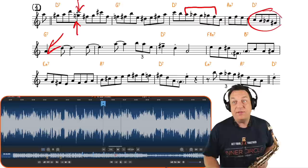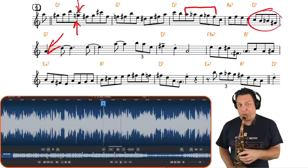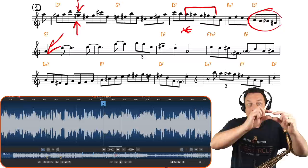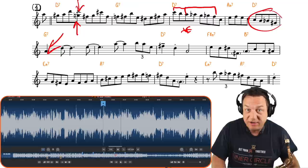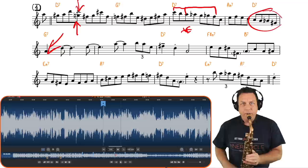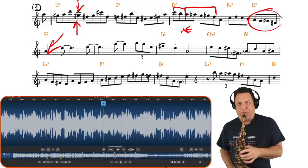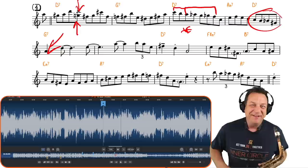Again, we have this chromatic enclosure leading to A. He's done that several times in the solo so far, that particular enclosure to A. And backing up to here again, we see these chromatic passages combined with diatonic passages. So there's the diatonic bit and there's the chromatic bit following it.